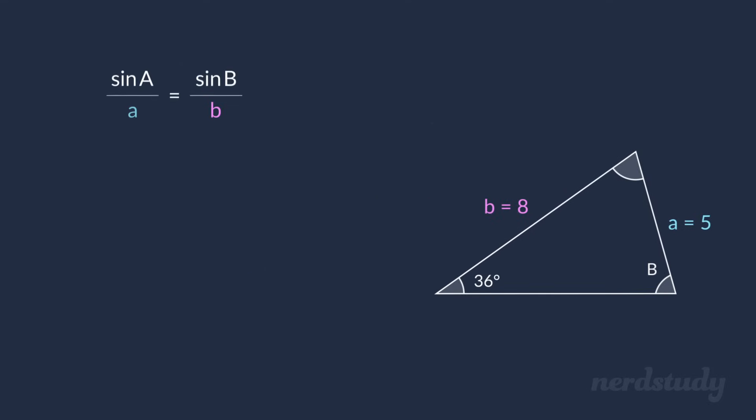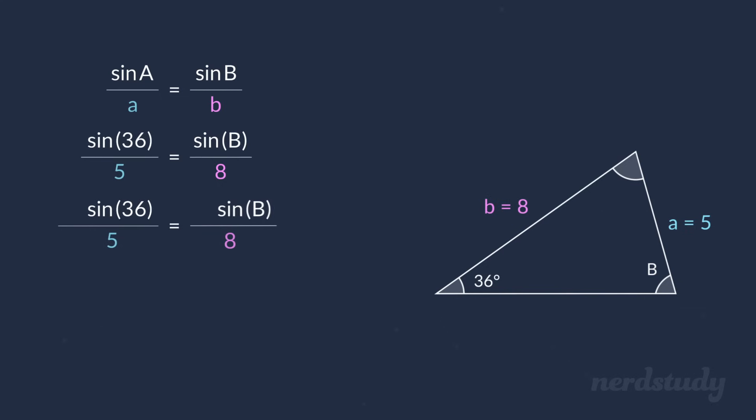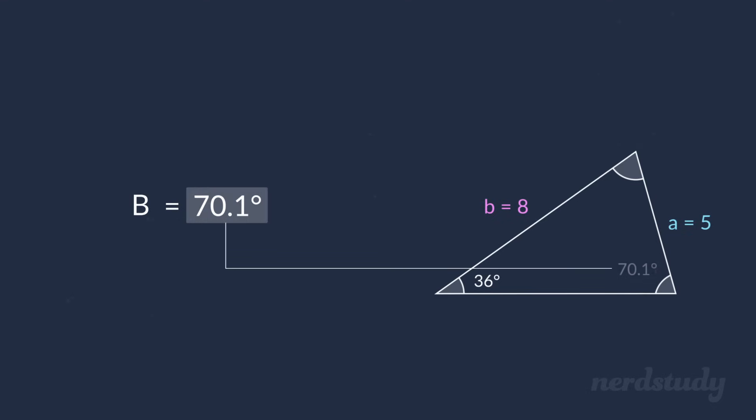To find the first one is easy. All we need to do is plug in our values into the sine law to get the following. Then we multiply both sides by 8 and rearrange to get this. Finally, we take the sine inverse of all of this to get a final value of roughly 70.1 degrees. Therefore we have 70.1 degrees as one of our angle B's.